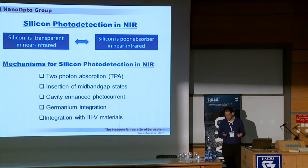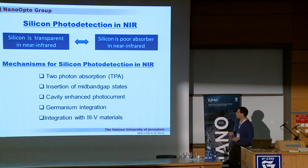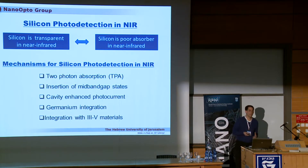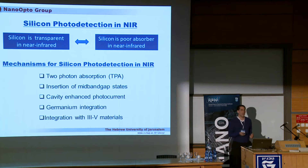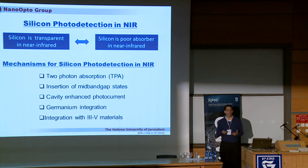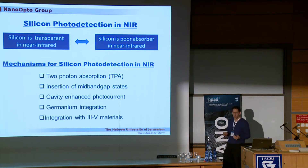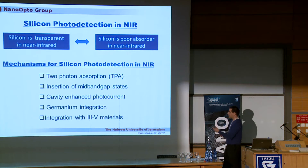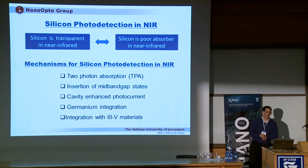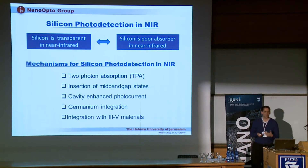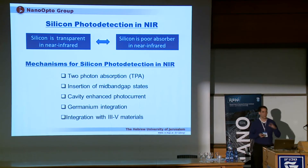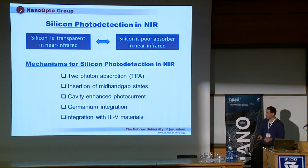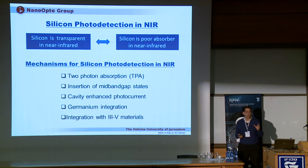If we try to detect light with silicon in the near-IR, say the 1.5 micron regime, silicon is transparent so we cannot detect light. There are some ways to circumvent this problem — for example, using two-photon absorption or insertion of some kind of mid-bandgap states in the silicon. You can enhance these phenomena by using cavity enhancement, or use different approaches such as integration of germanium or silicon-germanium structures to engineer the bandgap, or integrate III-V materials.